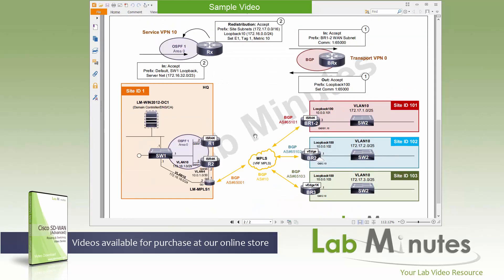There are two routing protocols that we are running: BGP for route advertisement into the MPLS, and OSPF at the headquarter site for the ISR 4K to distribute routes to the local switch. This is where we are going to use the localized control policy to control the route advertisement for BGP and the local OSPF at headquarter.